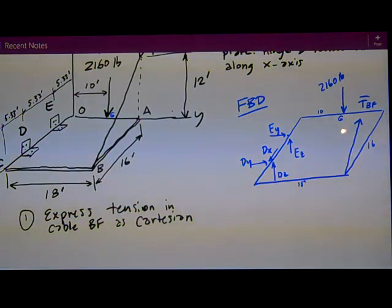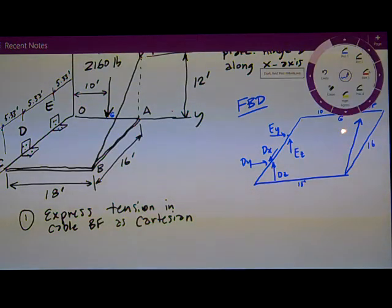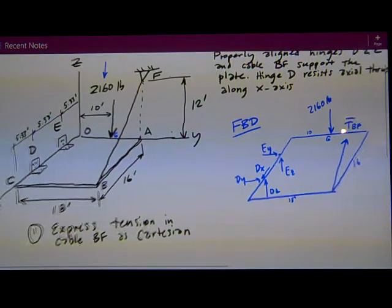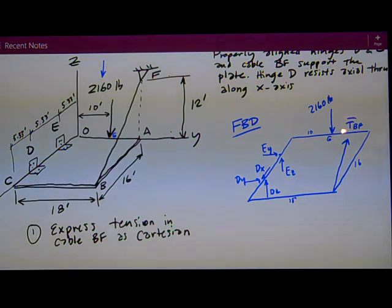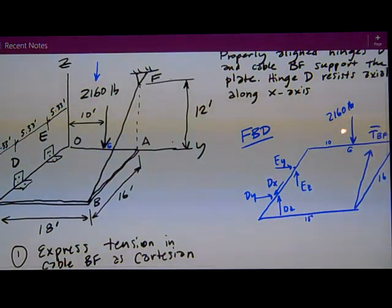The second part is to, really the first real problem after I get a free body diagram, is to express the tension of the cable BF in Cartesian. As usual on these tests, this is a logical step along the solution, the path of the solution: get everything in Cartesians. And so I need the coordinates of F and B, so I can get a position vector and then a unit vector in that direction.